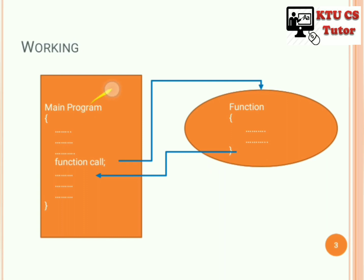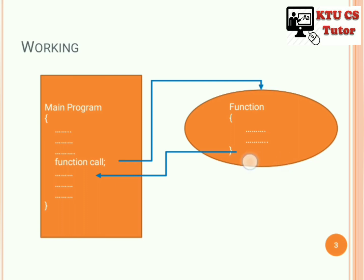How do functions work? We have a main program and a function which is implemented. Inside the main program there are a sequence of steps to perform, and in between those steps there is a function call — the statement used to call that particular function. Whenever this function call occurs, control transfers to that function and it starts executing the statements inside the function.